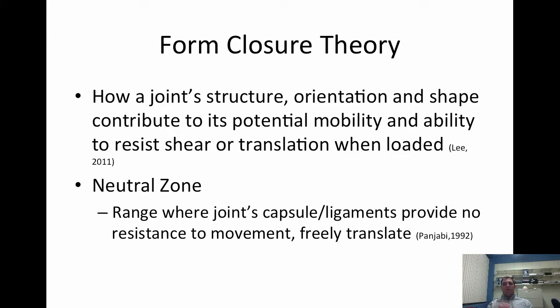The first part of the model is the form closure theory — how a joint's structure, orientation, and shape contribute to its potential mobility and ability to resist shear or translation when loaded. There's something called the neutral zone, which is the range where joints, capsule, or ligaments provide no resistance to movement and freely translate. This was written by Punjabi in 1992 — the article I posted to Taskstream for you to read. It's a relatively short article that talks about the neutral zone and intervertebral disc motion.